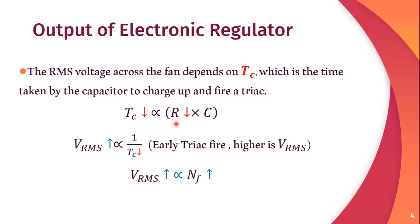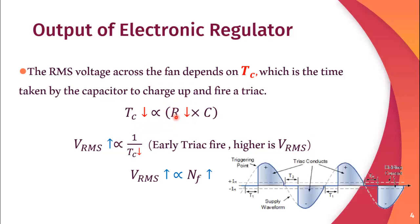So if we want to change the speed of the fan, we need to change this value of resistance, which in turn changes the time required to charge the capacitor. In this relation, V_RMS is inversely proportional to this time constant. It means that early the firing of the triac, the higher is the V_RMS and if there is more delay in the firing angle, there will be low V_RMS. So as the V_RMS is increased, the speed of the fan also increases.